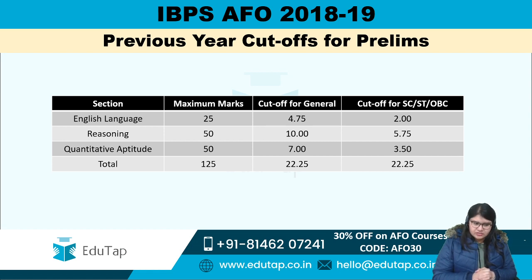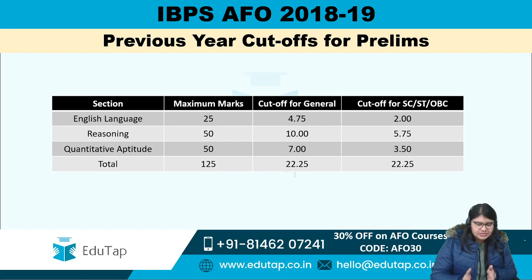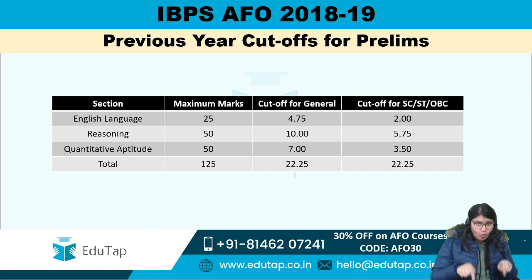In totality, with maximum marks being 125, the overall cutoff for general was 22.25 and for SC/ST/OBC it was also 22.25 — there was no difference in the cutoff between the general category and the other categories.